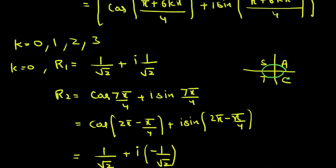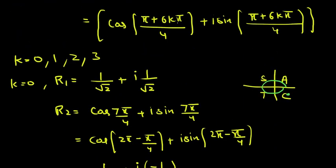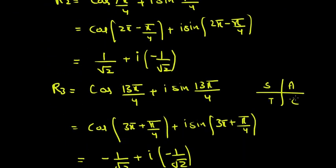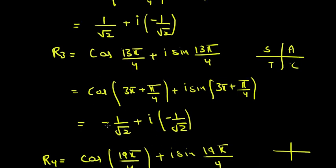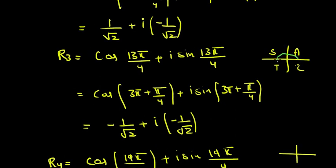When k = 2 we get (12π + π)/4 = 13π/4. We rewrite 13π/4 as 3π + π/4. Since this is in the third quadrant, both cosine and sine are negative. So R3 = −1/√2 − i(1/√2).